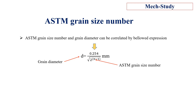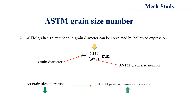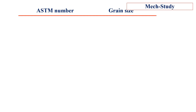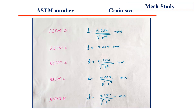By this equation we can say that as the grain size decreases, the ASTM grain size number increases. Here we have a table of different grain size numbers along with their corresponding grain sizes.